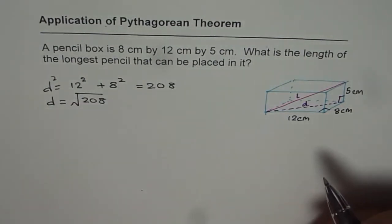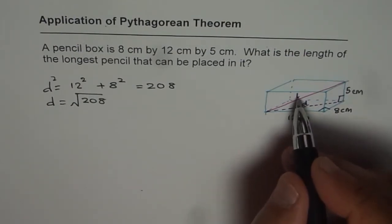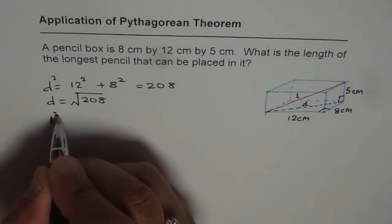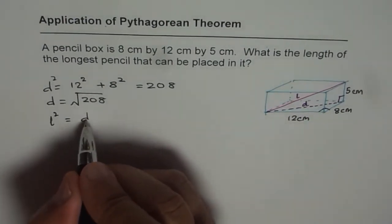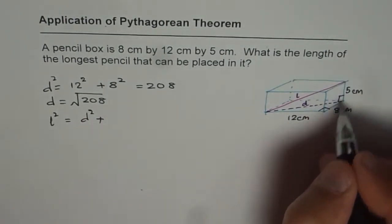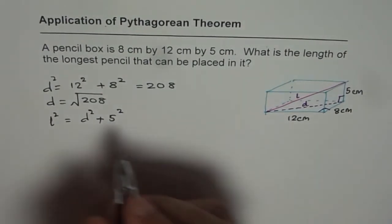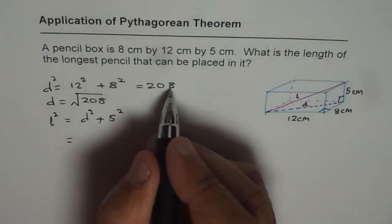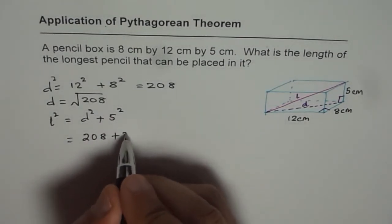Let us keep it as a square root since we have to square it. Now what is L? L² equals D² plus the height squared, which is 5². We know D² is 208, so we write 208 plus 5² is 25.